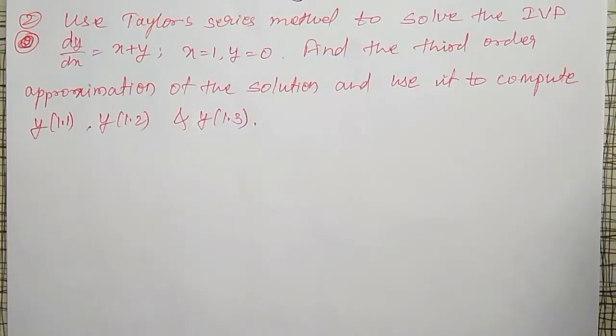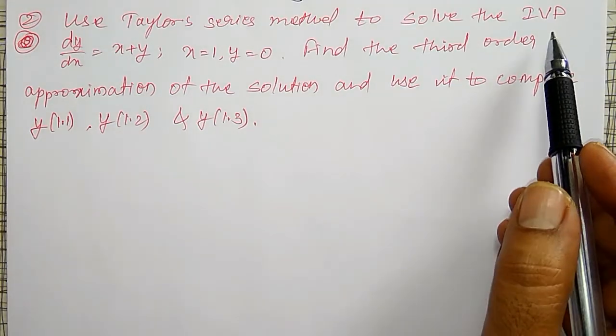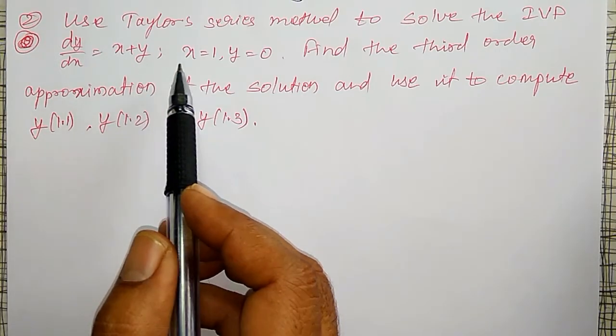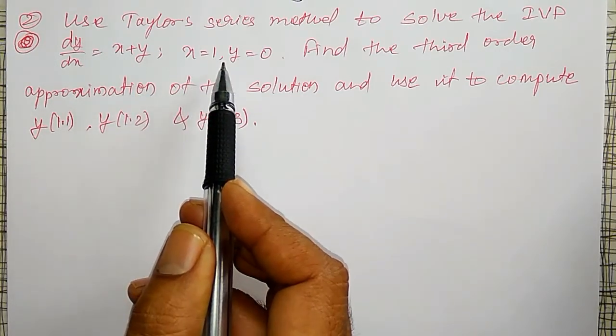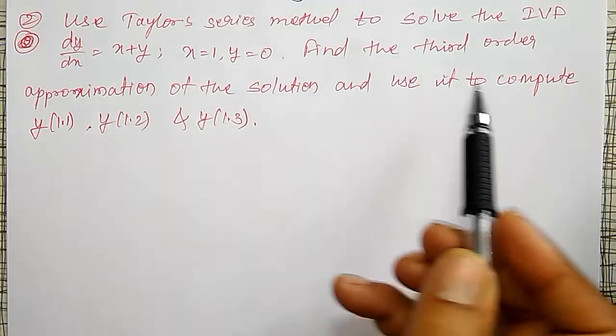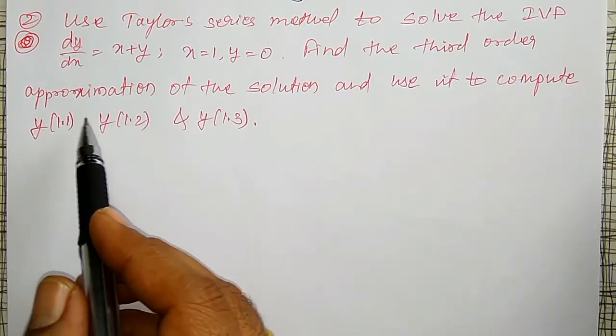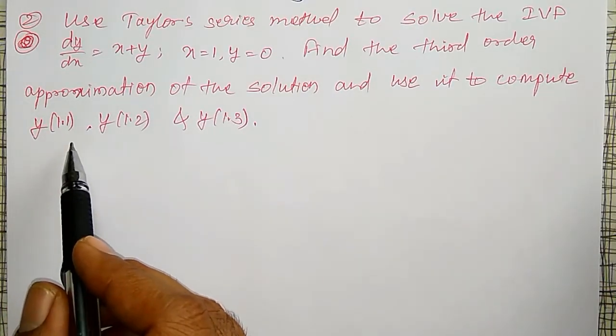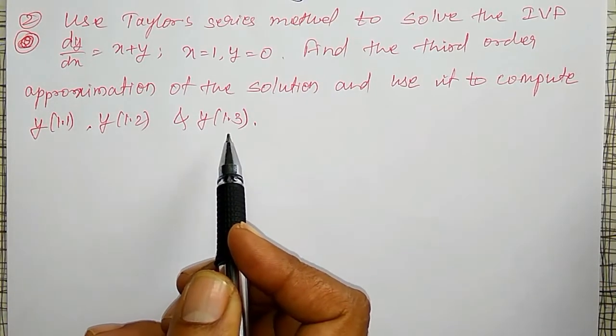In this video, one more example on a Taylor series method to solve initial value problem dy/dx = x + y, given x = 1 and y = 0. So, find the third order approximation of the solution and use it to compute y(1.1), y(1.2) and y(1.3).